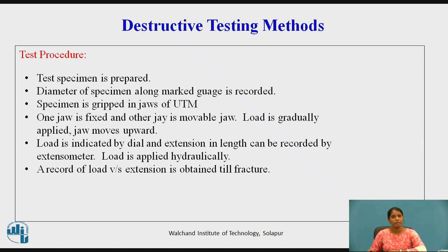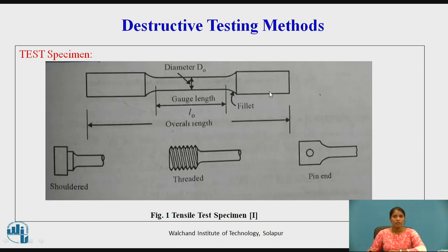A record of load versus extension is obtained till fracture, which is indicated on the stress-strain curve. This is the test specimen and this is the gauge length. There are different specimen types: shoulder specimen, threaded specimen, and pin end specimen.